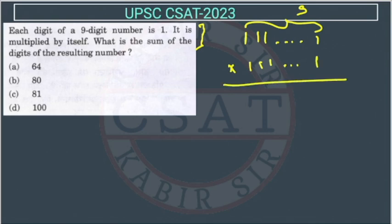What is the sum of the digits of the resulting number? So whatever the answer will come, we have to add all these digits and tell what will be the answer. Now see in this kind of question, what we have to do, we have to see the pattern. So first of all, just suppose take 11 into 11.